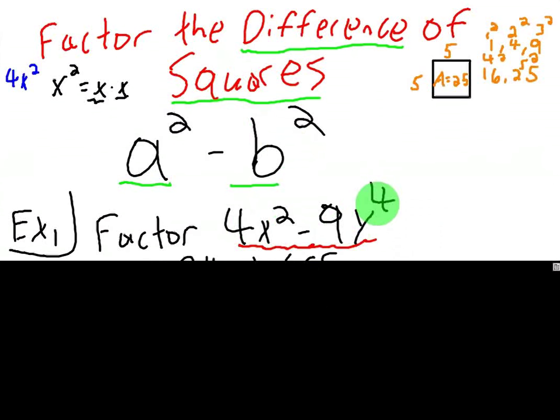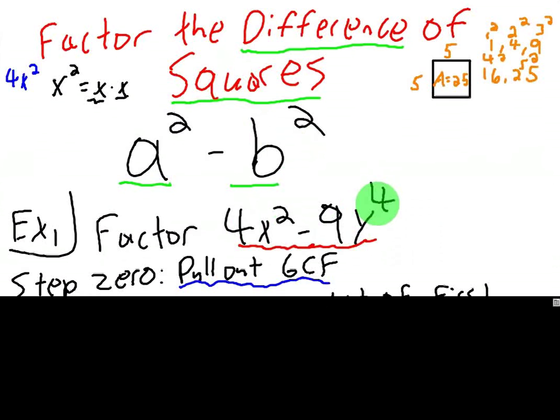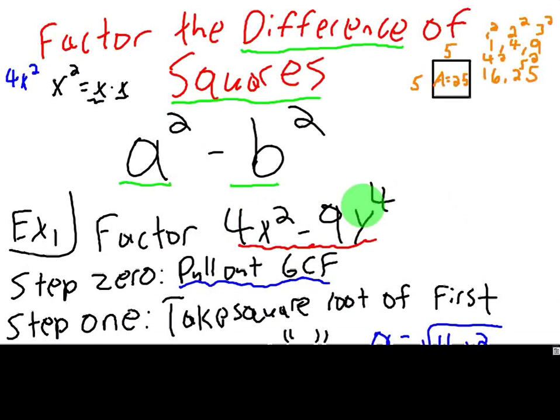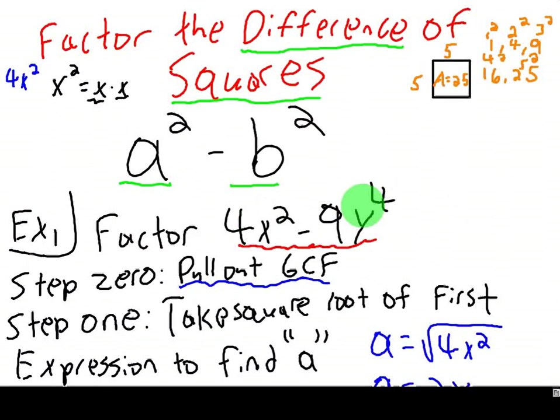Now you can factor stuff when it's not that way, but everything on the assignment will work out evenly. That leads us to step 0, your favorite step. Make sure, before you use the difference of squares, look to see if it has a GCF. Now this one doesn't. There's no number to pull out, and these are two different variables, but just always check to make sure. The next step, take the square root of the first expression, meaning the first term here.